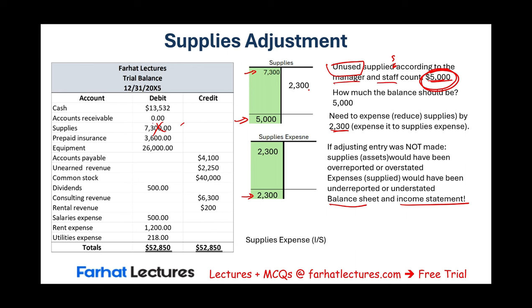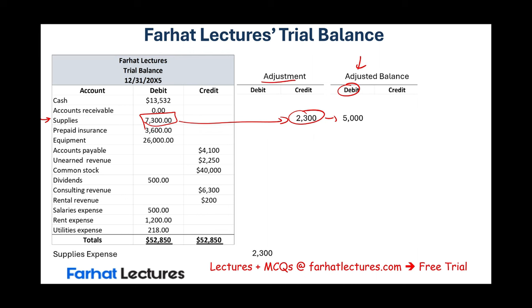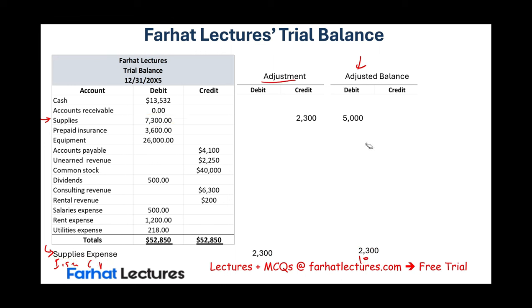This is the journal entry: debit supplies expense — increasing it — and credit supplies, reducing the asset. Under the 10-column trial balance, supplies was $7,300; we credit it $2,300 under adjustments; the adjusted debit balance is $5,000. Supplies expense is debited $2,300, giving an adjusted balance of $2,300. For reference, prepaid adjusted balance is $3,500 and insurance expense is $100. I'm showing one entry at a time to keep it simple.